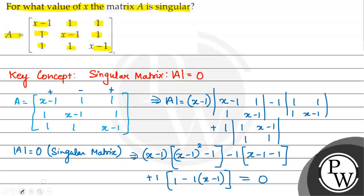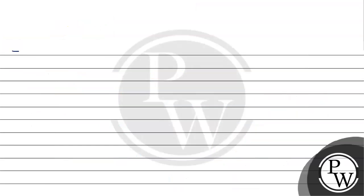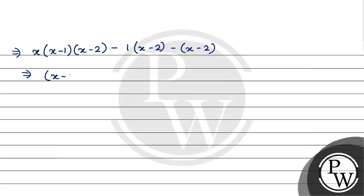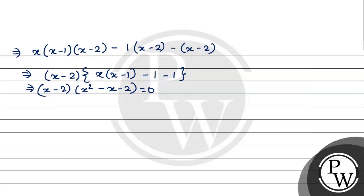So, what can I write as common? This simplifies to x multiplied by (x minus 1) multiplied by (x minus 2) minus (x minus 2) minus (x minus 2), which gives x minus 2 times x squared minus x minus 2, and this is equal to 0.